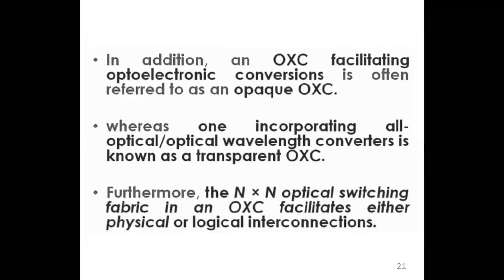The OXC processing features allow it to switch wavelength signals at any point in the network - that kind of OXC is known as a Wavelength Interchangeable Cross Connect, or WIX. The OXC can also be used as a regenerator. In current WDM networks, amplification is optoelectronic: the incoming optical signal is converted to electrical, amplified, then reconverted to optical. When this optoelectronic conversion occurs at every node, that kind of OXC is known as opaque.